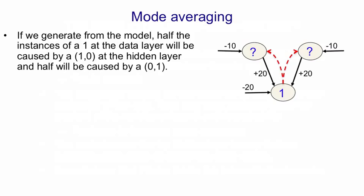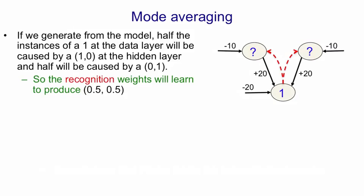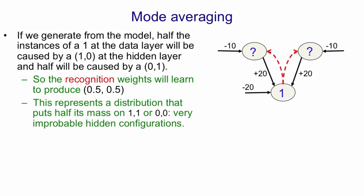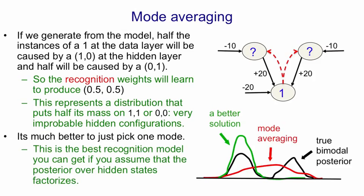Now think about what the learning will do for the recognition weights. Half the time we have a one on the visible layer, the left-most unit will be on at the top. So it will learn to predict that that's on with a probability of 0.5, and the same for the right unit. The recognition units will learn to produce a factorial distribution over the hidden layer of 0.5, 0.5. That factorial distribution puts a quarter of its mass on the configuration 1, 1 and another quarter on the configuration 0, 0 — and both of those are extremely unlikely configurations given that the visible unit was on. It would have been better just to pick one mode — to vote for truck or just to vote for earthquake. That's the best recognition model you can have if you're forced to have a factorial model.